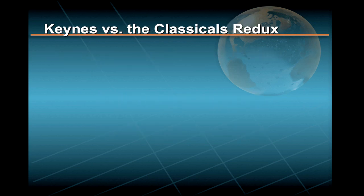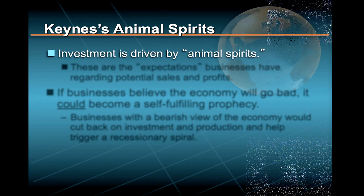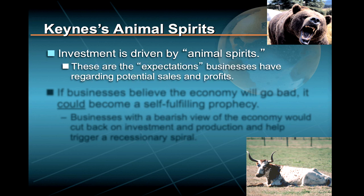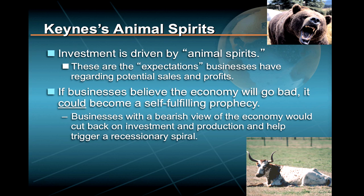Note, however, that while Keynes believed the interest rate was important in determining investment, he did not believe that falling interest rates and increased investment would necessarily lead to a full employment equilibrium like the classical economists did. This is because Keynes believed that investment was in large part driven by a second important determinant: namely the expectations or business confidence that businesses had regarding potential sales and profits. Keynes referred to these expectations as animal spirits, and said that if businesses believed the economy was about to go bad, it could become a self-fulfilling prophecy — businesses would cut back on investment and production and thereby help trigger a recessionary spiral.